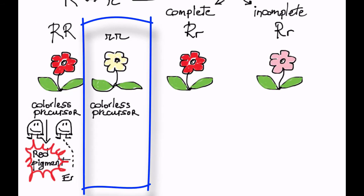The little r allele does not encode a functional enzyme and in the little r little r plant, the precursor cannot be converted into the red pigment.